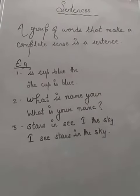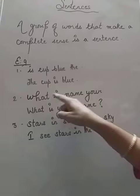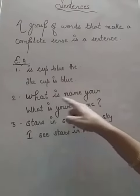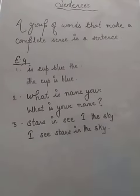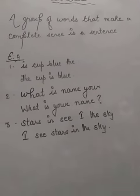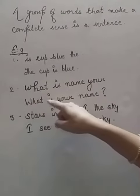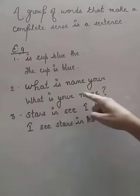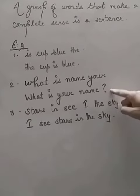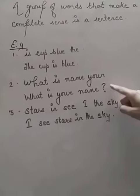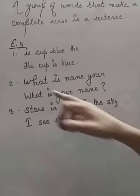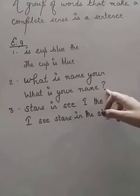Let us go to the next example. 'What is name your?' You can make out, but still this is not a correct sentence. Let us rearrange this: 'What is your name?' Here we have given a question mark because you are asking a question. Now it is making proper sense.